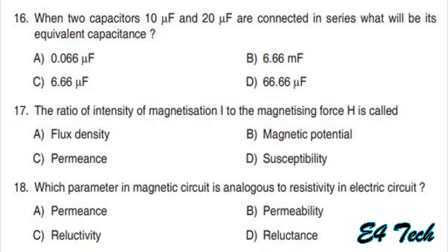Next: when two capacitors of 10 microfarad and 20 microfarad are connected in series, what will be the equivalent value? For capacitors in series, 1/C = 1/C1 + 1/C2. So 1/C = 1/10 + 1/20. Therefore C = 6.66 microfarad. Option C.